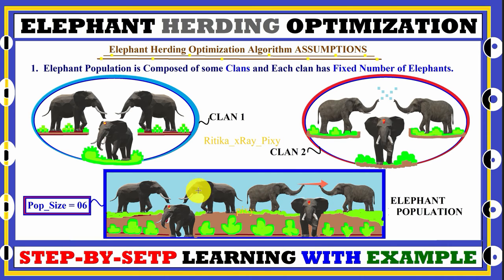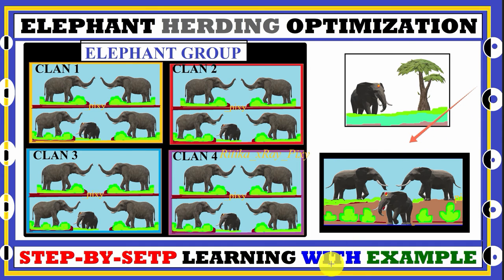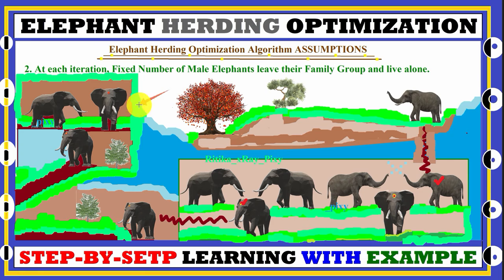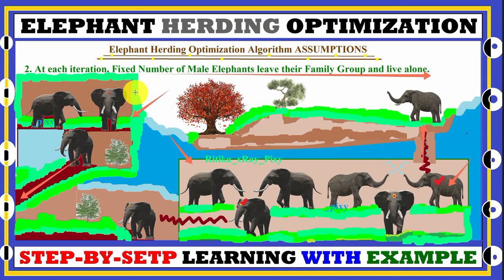There is no strong bond between elephants in the group because family groups split after becoming too large for available resources. The second assumption, modeled as the separating operator, is that male elephants leave their family groups and live alone or with other male elephants. In each iteration, a fixed number of male elephants leave their family groups, so in each iteration we replace only a fixed number of elephants.